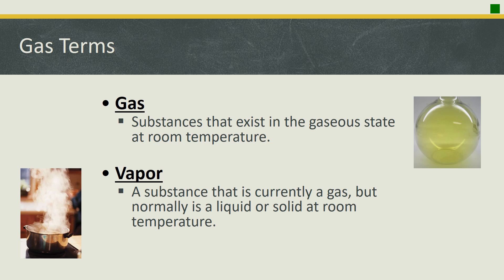Some different terms to know: what is the difference between gas and vapor? A gas is something that exists in the gaseous state at room temperature, whereas a vapor is currently a gas but typically does not exist in that state at room temperature. That's why we say carbon dioxide gas — because CO₂ is a gas at room temperature — but we say water vapor, because water is typically a liquid at room temperature and is considered a vapor when seen in the gaseous state.